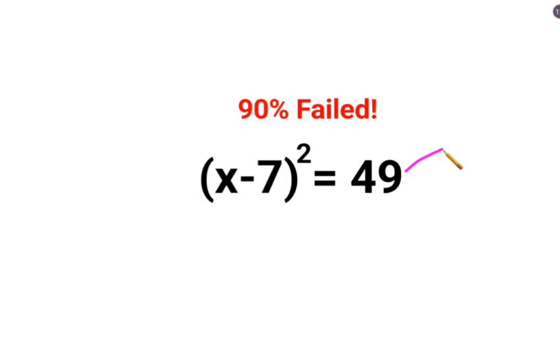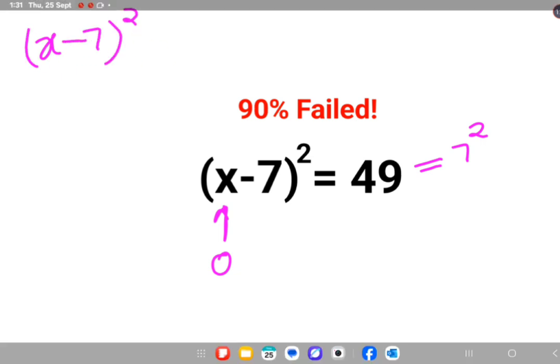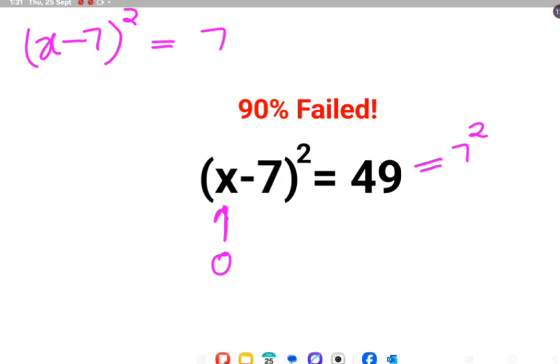Right? So this is basically 7 square. At this point, what people think is that the answer for x can be 0. But please understand that x minus 7, the whole square, is equal to 49 which can be written as 7 square.